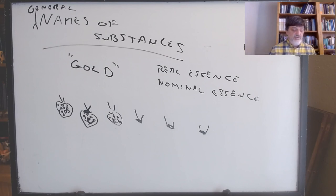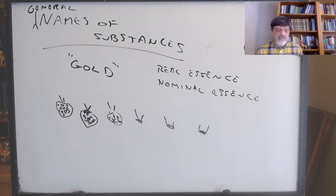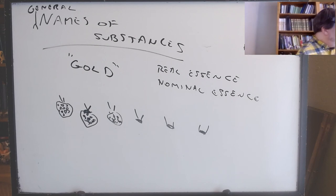If it weren't for the nominal essence, there would be no such type of thing as gold. We've collected those things together because they agree with the nominal essence. How can we be so sure that we've sorted things by the nominal essence and not by the real essence? Well, Locke has a lot of arguments, but first of all he says: we don't know what the real essence is.